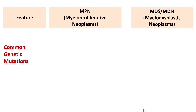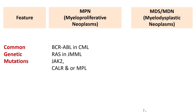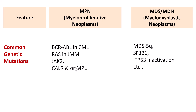Common genetic mutations in Myeloproliferative Neoplasms: BCR-ABL in CML, RAS mutation in juvenile myelomonocytic leukemia, JAK2 mutation in polycythemia vera, and CALR or MPL mutation in essential thrombocythemia. In Myelodysplastic Neoplasms, important genetic abnormalities include 5Q deletion, SF3B1 mutation, and TP53 inactivation. There are notable differences in genetic mutations between these two neoplasms.